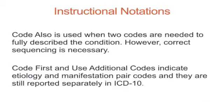Code Also is used when two codes are needed to fully describe the condition; however, correct sequencing is necessary. Code First and Use Additional Code indicate etiology and manifestation pair codes, and they are still reported separately in ICD-10.